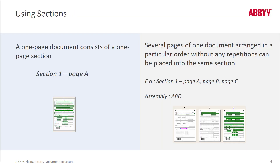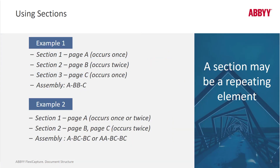When you first create a document definition, a document section is created and you can add to that one or more pages. You can place more pages in a single document section, such as this example, when all three of these pages always exist. But we can also account for variations.